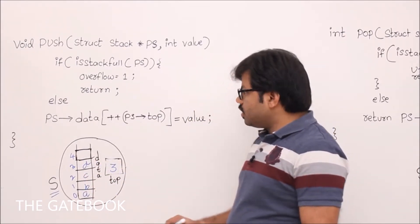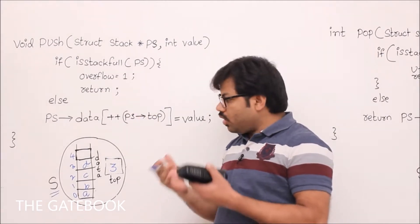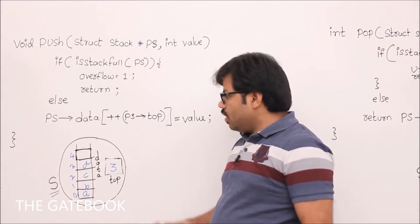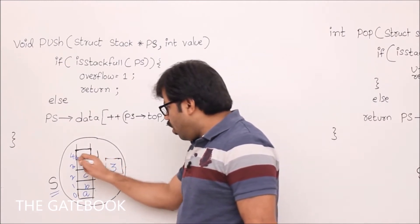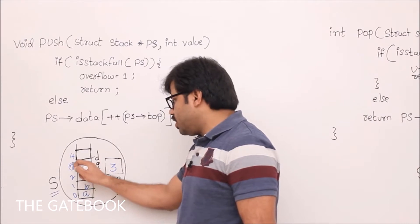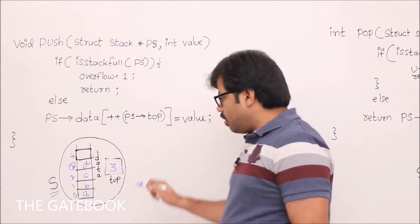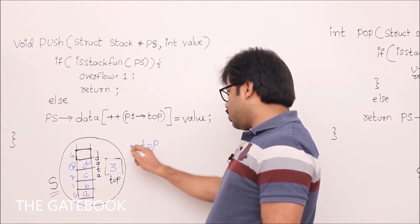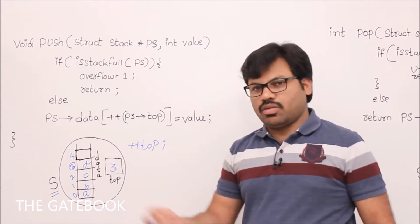When you do push, what are you expecting pictorially? We should go to the next location after index 3, that means we have to go to 4 — which is 3 plus 1. So first you want to increment top — that is, plus plus top.